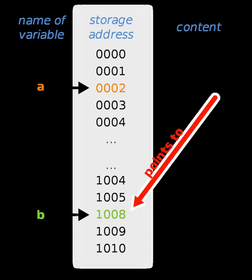In some languages, a pointer can reference executable code — i.e., it can point to a function, method, or procedure. A function pointer will store the address of a function to be invoked. While this facility can be used to call functions dynamically, it is often a favorite technique of virus and other malicious software writers.